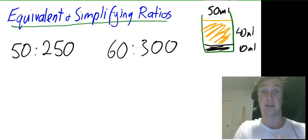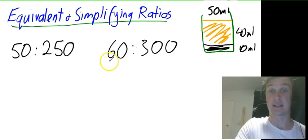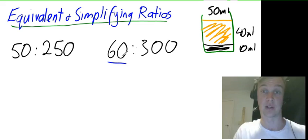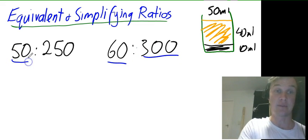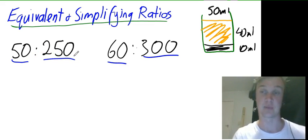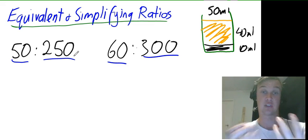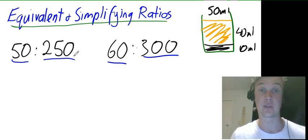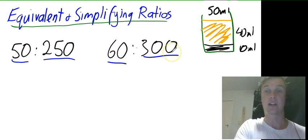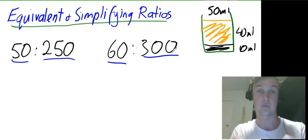My brother he used to have with his glass he had 60 ml of Milo, 300 ml of milk. I had as we said 50 ml of Milo and 250 ml of milk. Now we wanted to see who had the stronger ratio. So the only way we can do this is if we simplify these two ratios to see which one is stronger.